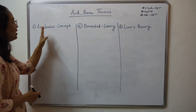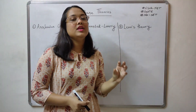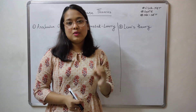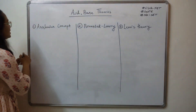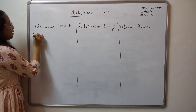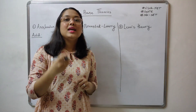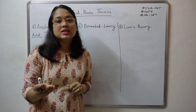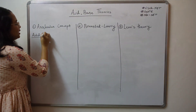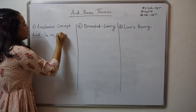We will start with the Arrhenius concept. Each of these theories puts forward a definition in order to understand what acids are and a definition in order to understand what bases are. Arrhenius concept with respect to an acid says that when you dissolve an acid in an aqueous medium, the acid will dissociate giving us H+ ions. One important condition is that the dissociation is studied in aqueous medium.